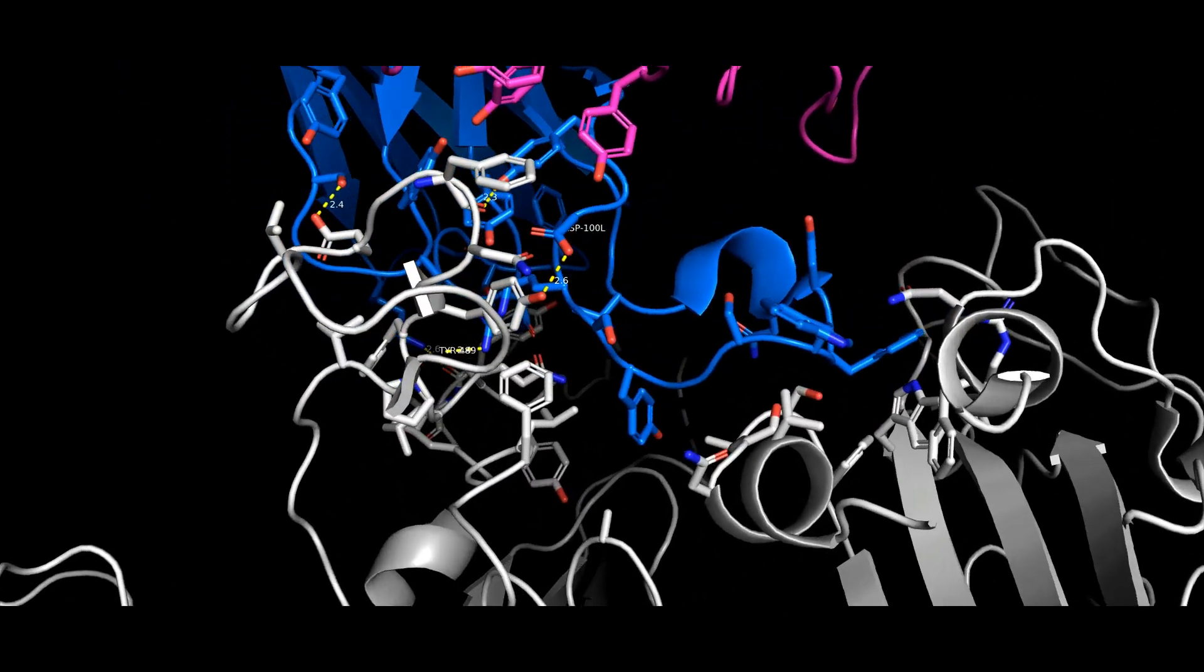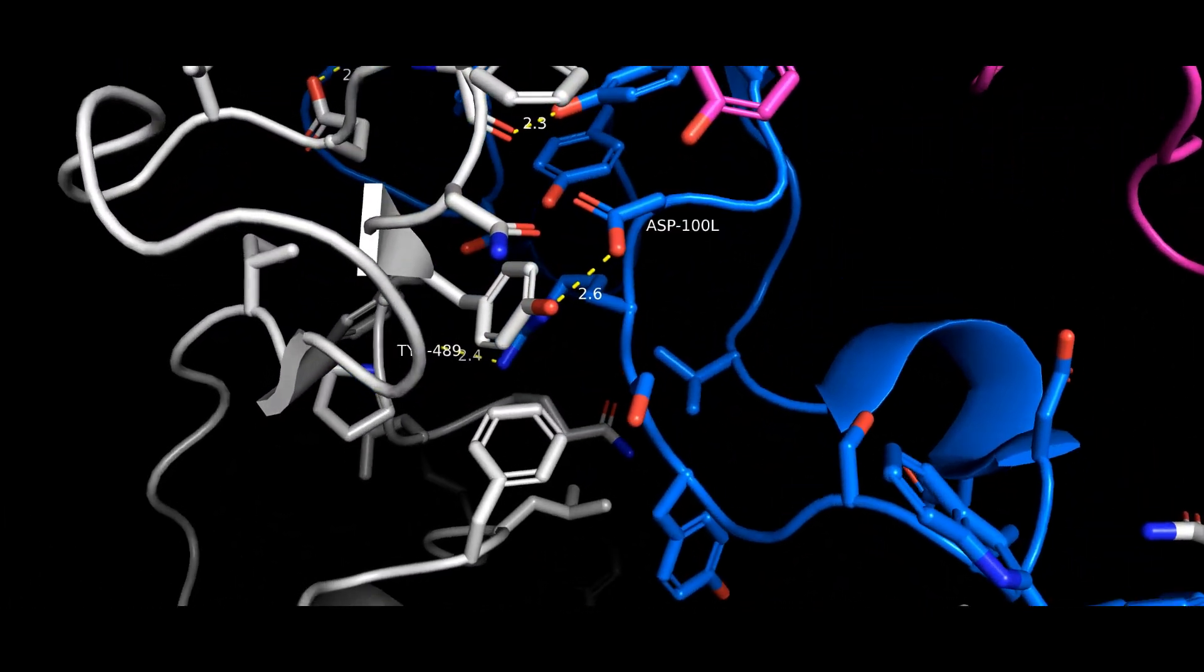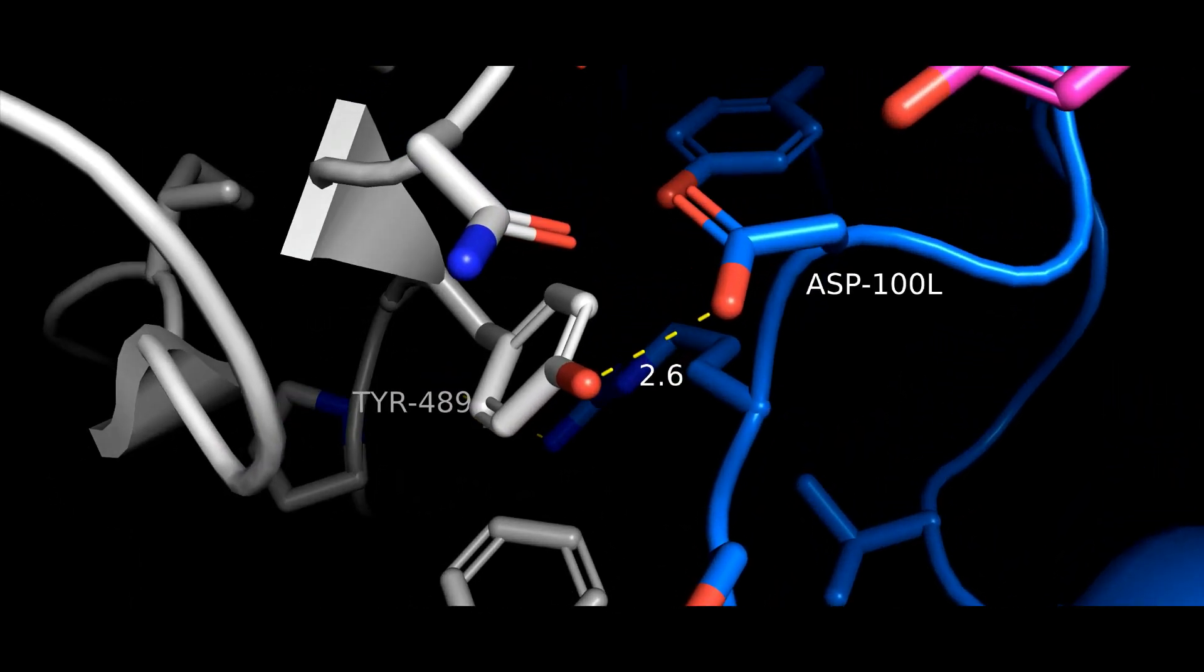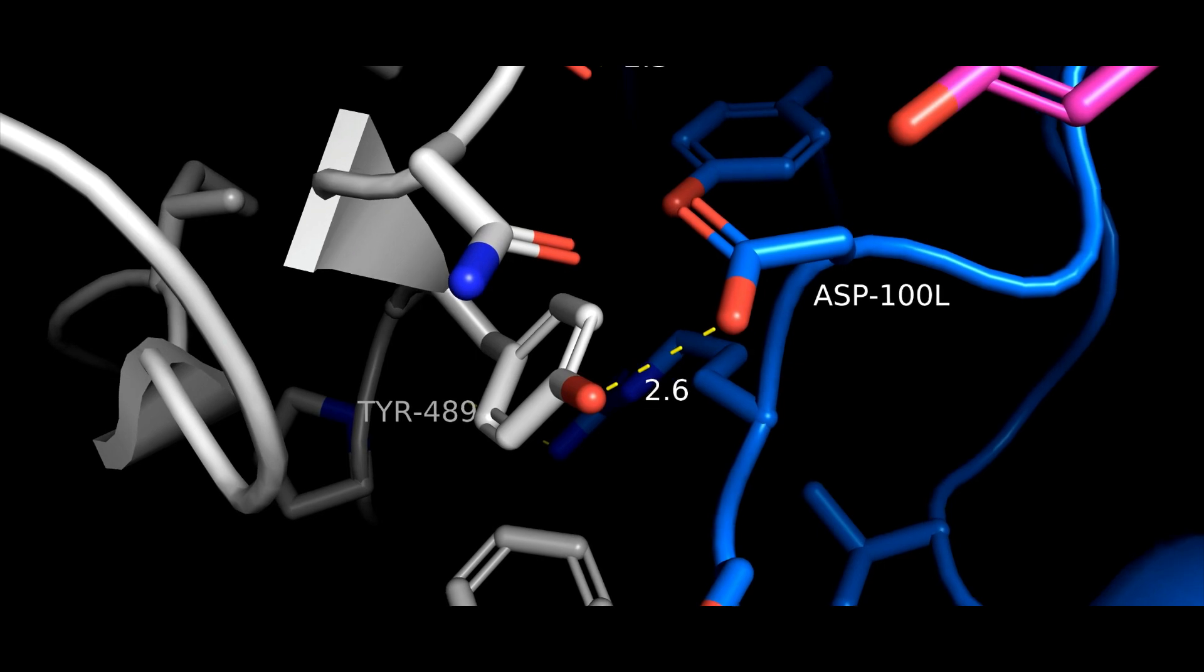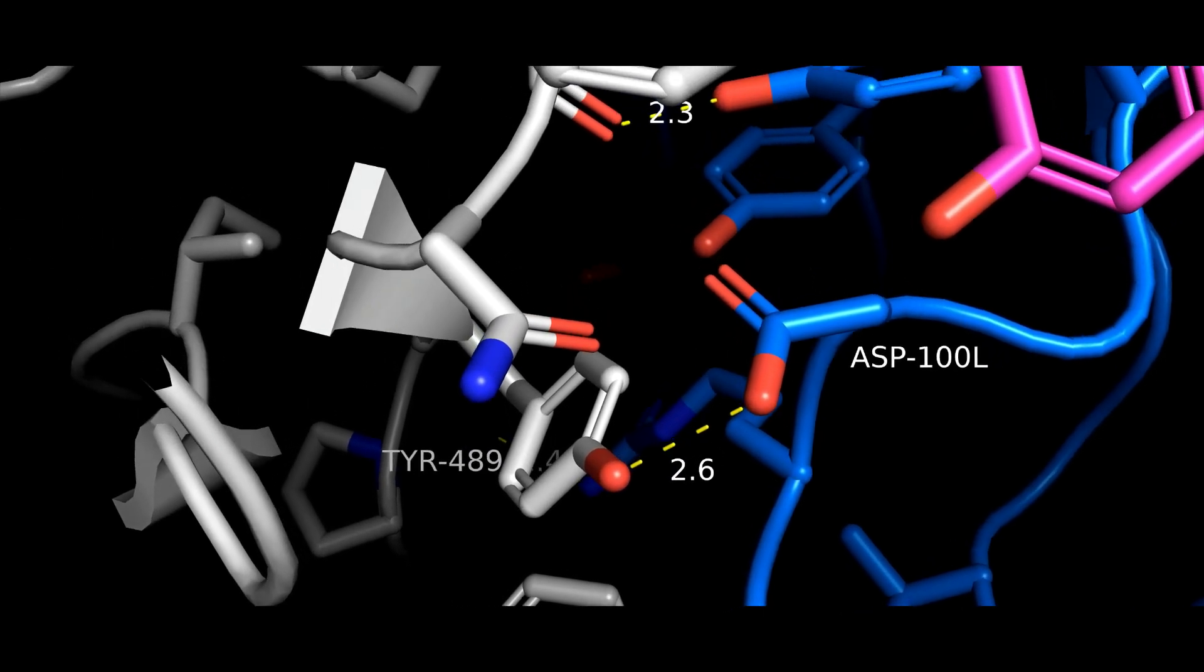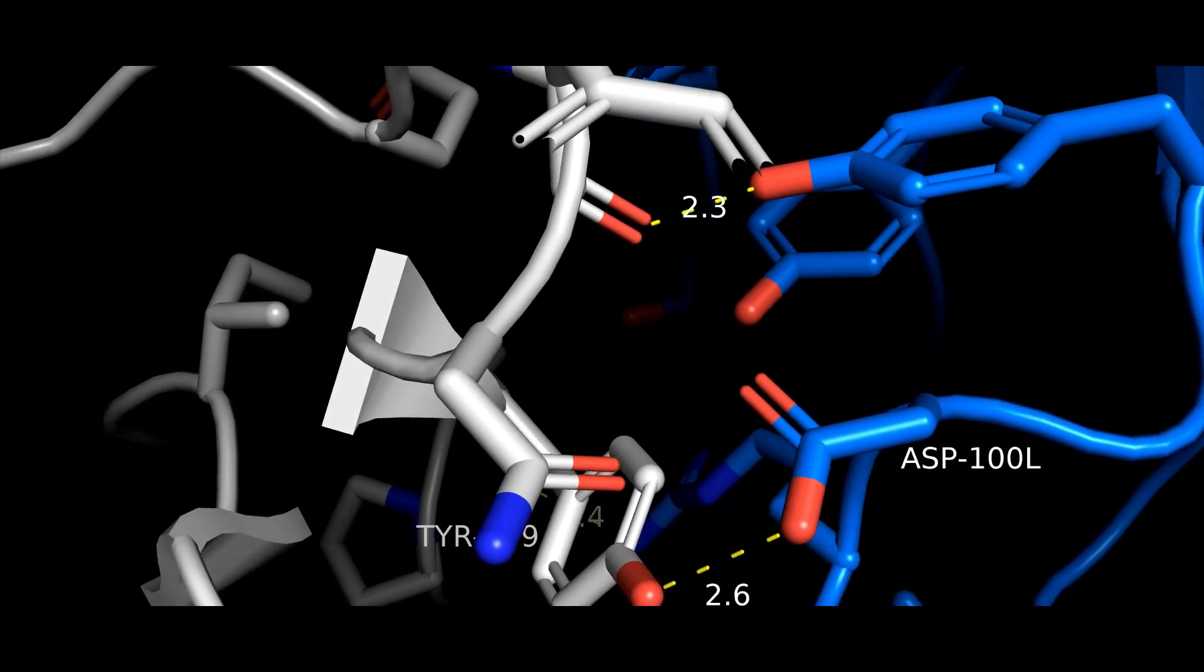Some of the interactions stabilizing the structure are hydrogen bonds, like this short strong one that forms between the OH group on tyrosine and the negatively charged aspartate side chain. Remember, in these structures, the hydrogen atoms aren't usually shown.